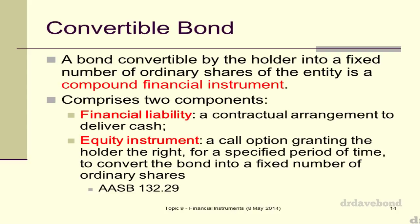A compound or convertible bond — this is actually from the standard, paragraph 29. A bond convertible by the holder into a fixed number of ordinary shares of the entity is a compound financial instrument. For most of this topic, those that are doing finance majors may find a lot of what we talk about a little bit easier, but that's okay because we will try to explain it in a way that gets everyone on the same page.